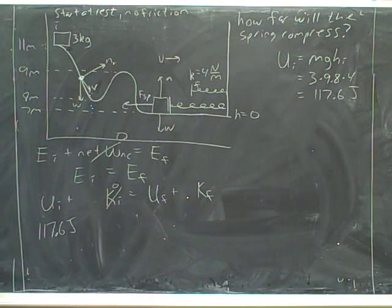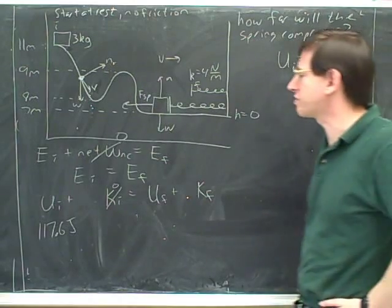So the height component would zero anyways, so the spring component would be one half kx squared. Good. That's right.